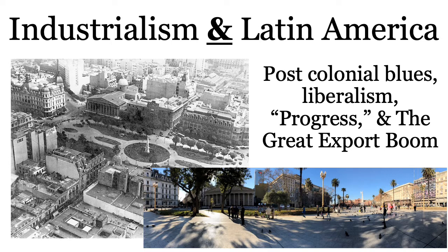What you're looking at is Buenos Aires. The picture in gray is Buenos Aires from about 1870–1880. The picture below is one I took in Buenos Aires in 2018 — same area. You can actually see the same statue in both. At the far end you see the large pink thing, called the Pink House — that's where the president of Argentina lives.